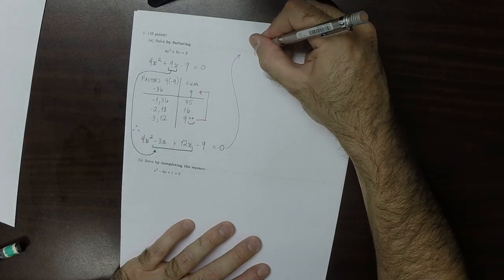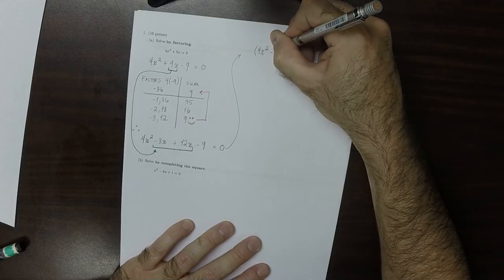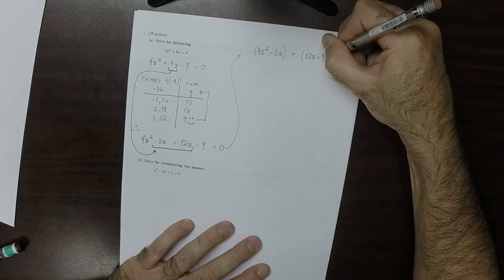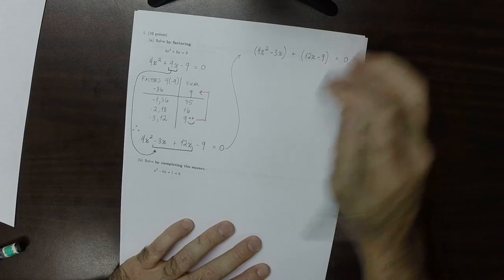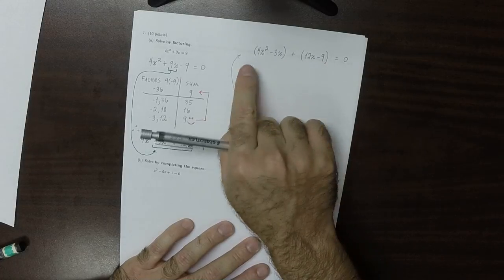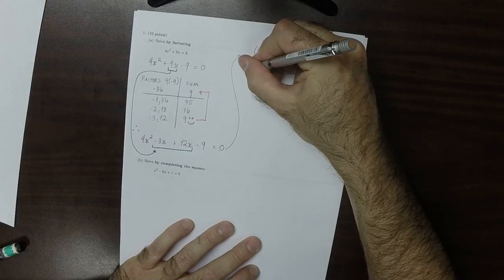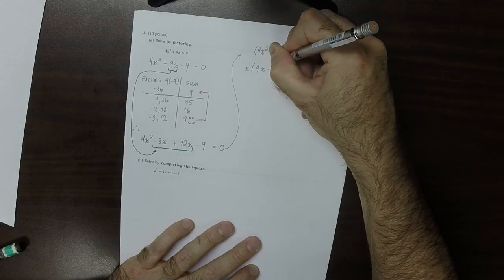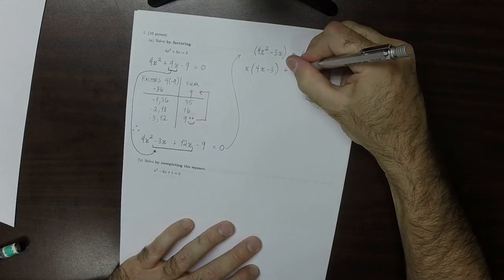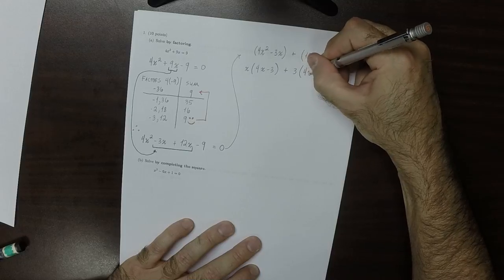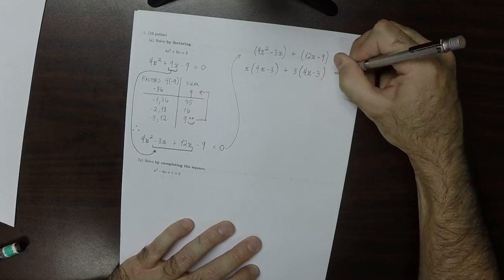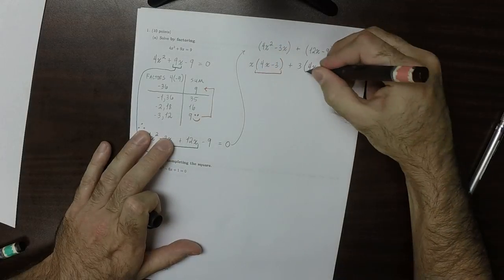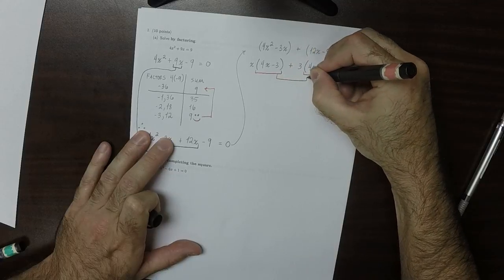So now what we're going to do is form groups and say that this is 4x squared minus 3x, and then plus 12x minus 9, equal to 0. With each group we're going to factor out the greatest common factor. In the first group, the greatest common factor is x, and what remains inside is 4x minus 3. In the second group, the greatest common factor is 3, and what remains inside is 4x minus 3.